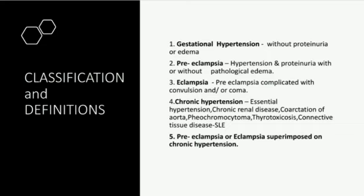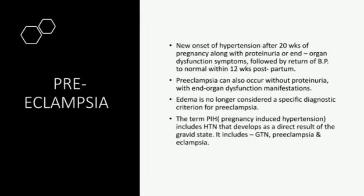Now we will elaborate on preeclampsia. Preeclampsia is the new onset of hypertension after 20 weeks of pregnancy along with proteinuria or end-organ dysfunction symptoms, followed by return of blood pressure to normal within 12 weeks postpartum. It is a multisystemic disorder of unknown etiology characterized by development of hypertension to the extent of 140/90 mmHg or more with proteinuria after the 20th week of pregnancy in a previously normotensive and non-proteinuric patient.